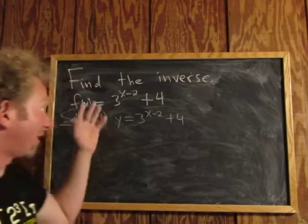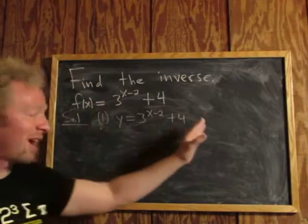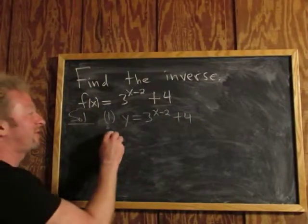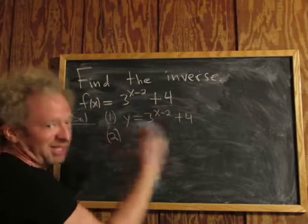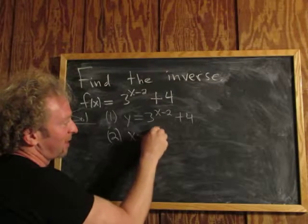An inverse and its function undo each other, right? If a function sends x to y, the inverse sends y back to x. So it's natural that when we're looking for the inverse, we switch the x's and the y's. This y will become x, and this x will become y.